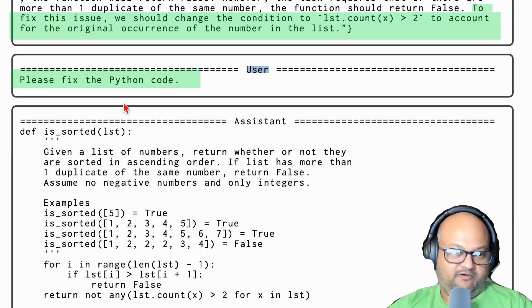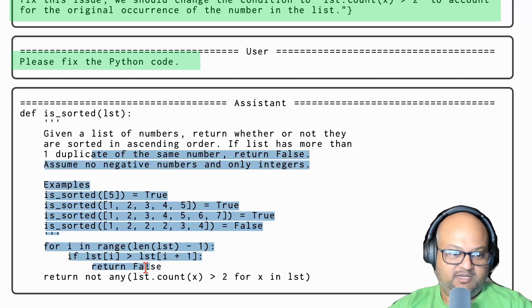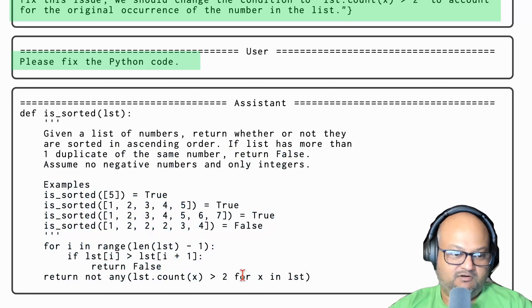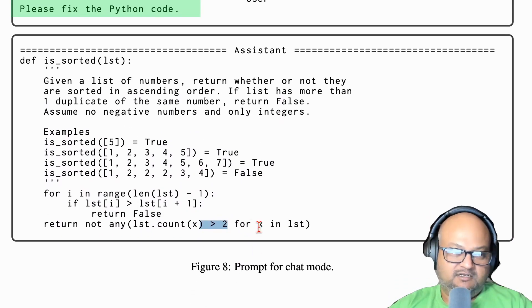The user follows that up with a prompt saying 'please fix the code.' The LLM comes back with a fixed version of the code. You can see how it has changed this greater than condition. That passes all the unit tests. You can see how this is mimicking the typical human process of debugging code.